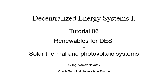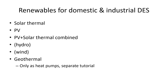Hello, I'm Vaclav Novotny and welcome to the tutorial of Decentralized Systems 1. This tutorial will be focused on renewables, specifically solar power and solar thermal systems. We will talk about renewable resources for use in domestic or industrial applications - solar thermal and photovoltaic, or a combination of both. Renewable resources also include hydro and wind, but these are only rarely usable in the applications we are going to talk about here, and they are largely addressed in other courses.